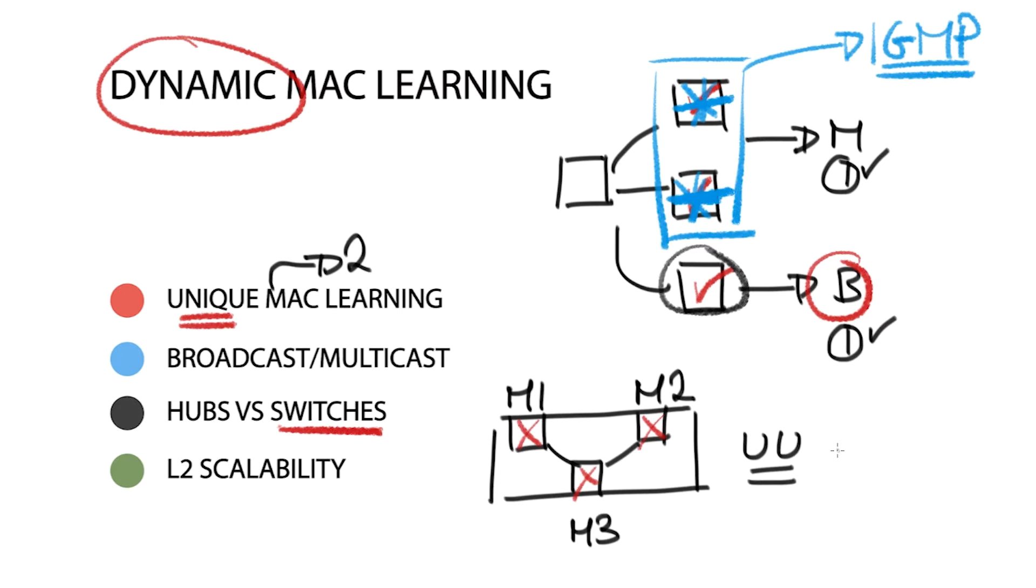This behavior is undesirable and causes a lot of scalability concerns. An unknown unicast frame has an unknown destination MAC address. An ARP request is an example of an unknown unicast frame, as it sends to the broadcast MAC address. Layer 2 networks exhibit a lot of flooding and dynamic MAC learning that hinders the overall network scalability and efficiency.